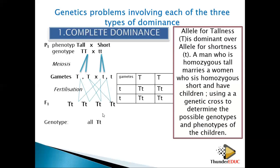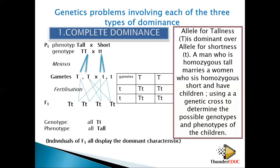The genotype of all F1 offspring is capital T small t (Tt). Because the capital T is present, the phenotype is tall. We do not say 'heterozygous tall' in the phenotype — we simply say tall. All individuals of the F1 generation display the dominant characteristic: they are all tall.